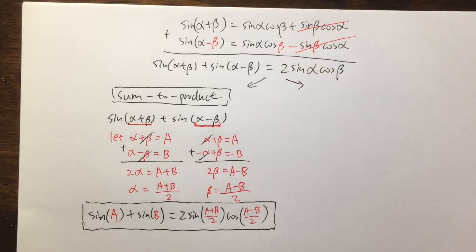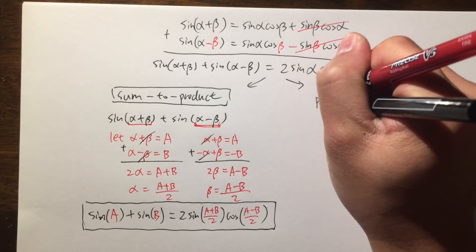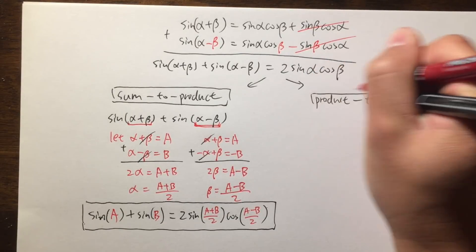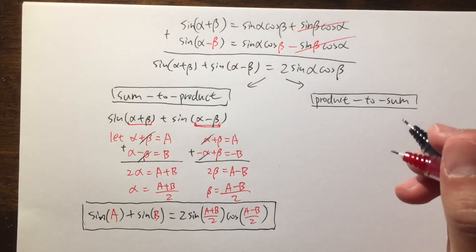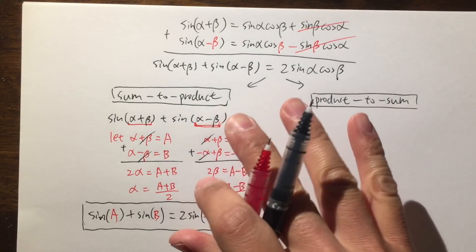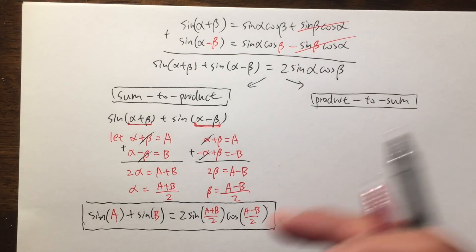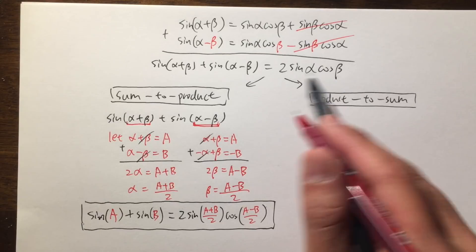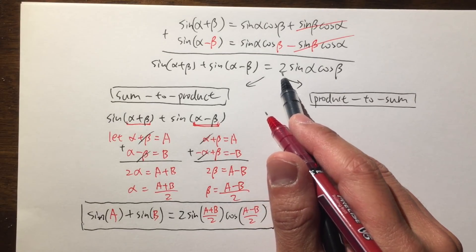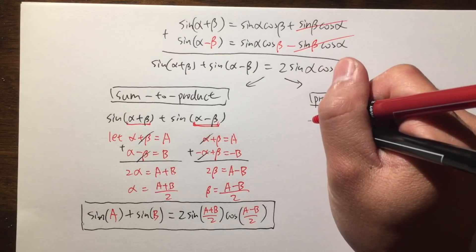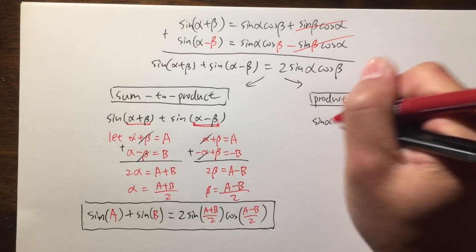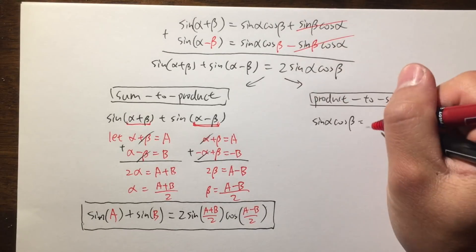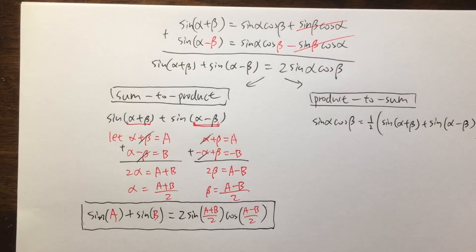I will show you how to do the product-to-sum identity. I want to show you what if we have sine times sine with different angles. From here, you see we have sine times cosine, but there's a 2 in front, so let me just divide both sides by 2. So sine alpha times cosine beta equals one-half times all that.